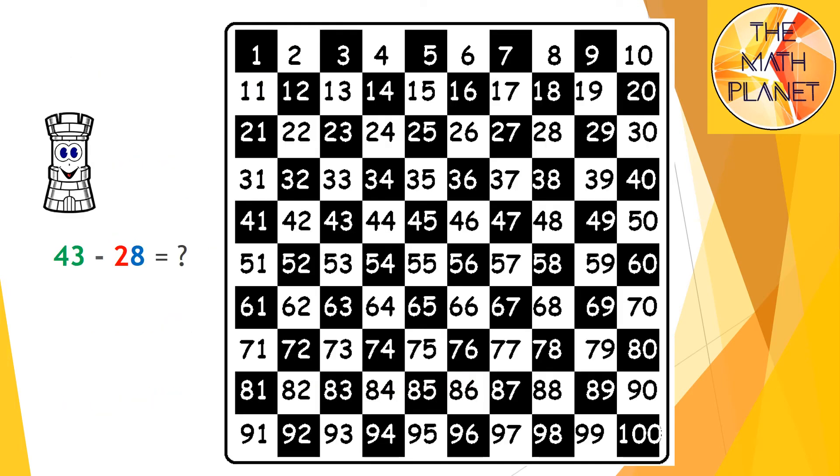Let's apply it on the hundred chart. The start point is 43 and then I'll move 2 steps up and 8 steps to the left. Here are 1, 2 steps up and here are 1, 2 steps to the left. I need to move 6 more steps to the left.